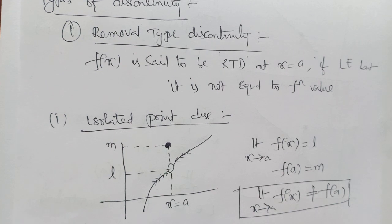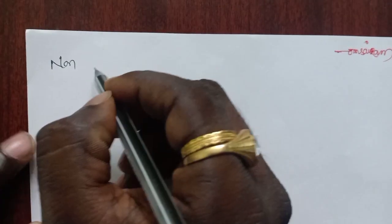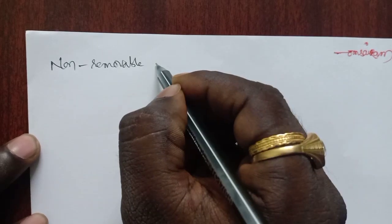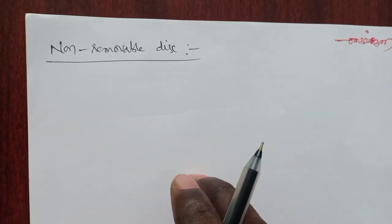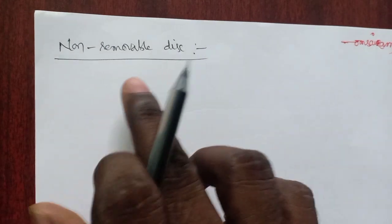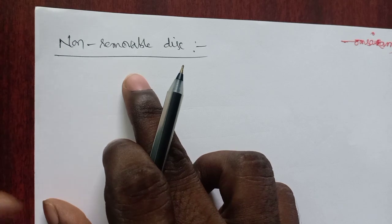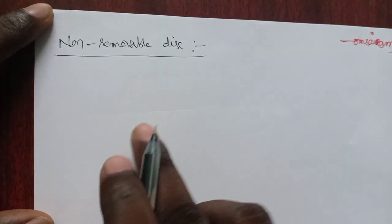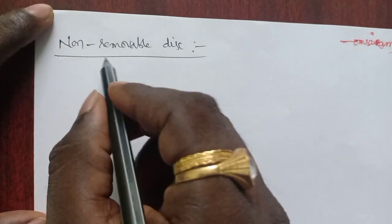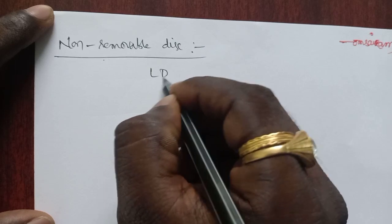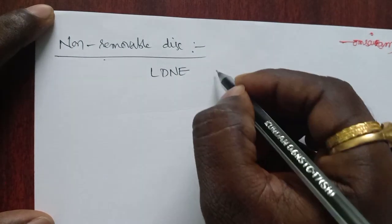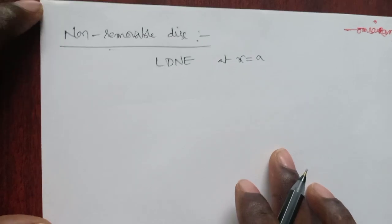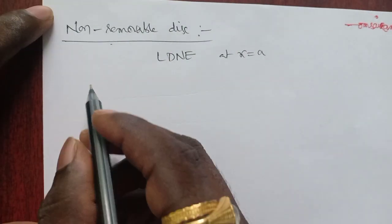Now, non-removable type discontinuity: f(x) is said to have non-removable discontinuity at x equal to a if the limit does not exist. Unlike removable type where the limit exists, here the limit does not exist — that is why it is called non-removable discontinuity. There are two cases here as well.